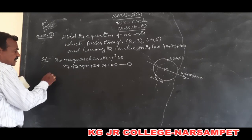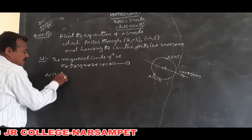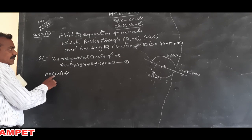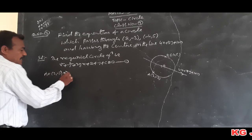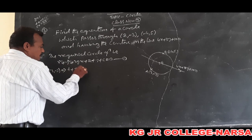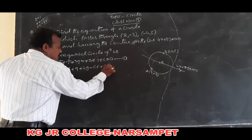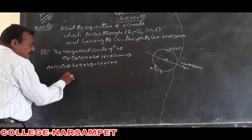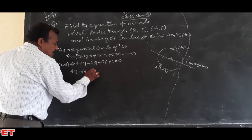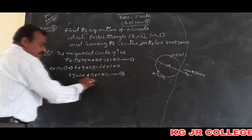This circle passes through point A (2, -3). That means this point must lie on the circle, so x = 2 and y = -3. Substituting: 4 + 9 + 4g - 6f + c = 0. Writing this in order: 4g - 6f + c + 13 = 0. This is the first relation.